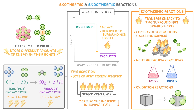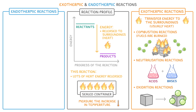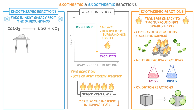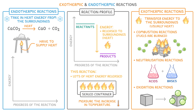The opposite of an exothermic reaction is an endothermic reaction. These are reactions which take in heat energy from the surroundings. For example, if we wanted to break down calcium carbonate into calcium oxide and carbon dioxide, we'd have to supply heat — perhaps by using a Bunsen burner to heat up the solid calcium carbonate. If we drew a reaction profile for this reaction, our reactants would be on the left and the products on the right, but this time the products would be higher up, because they have more energy than the reactants. So we'd label this difference as the energy absorbed, rather than the energy released.